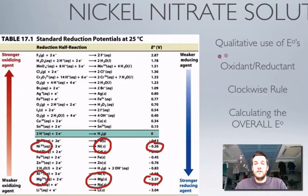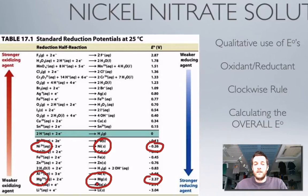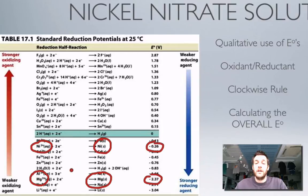Using the oxidant-reductant method, nickel ions are further up to the top left — where the strong oxidizing agents are — so nickel ions are a stronger oxidizing agent than magnesium ions. If nickel ions react with magnesium and produce magnesium ions and nickel, those magnesium ions would not be able to take the electrons away from nickel because magnesium ions aren't a strong enough oxidizing agent. You could also express this in terms of the reducing agent: magnesium is a stronger reducing agent than nickel, so magnesium atoms will give their electrons to nickel ions.